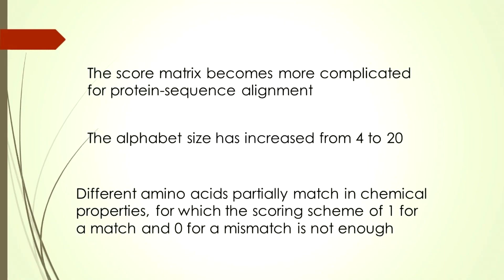The score matrix becomes more complicated for protein sequence alignment. Why? There are two reasons. First, the alphabet size has increased from 4 to 20. In DNA there are only 4 bases, but in protein there are 20 amino acids. The second reason is, for proteins, the scoring scheme of 1 for a match and 0 for a mismatch is not enough.